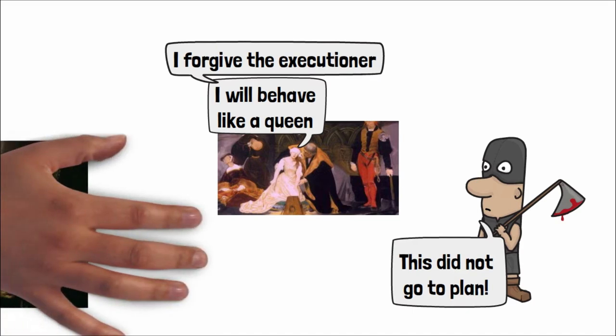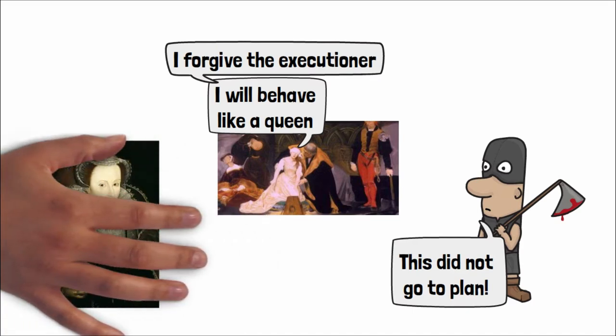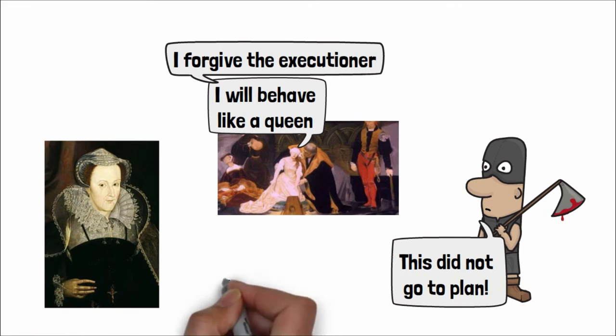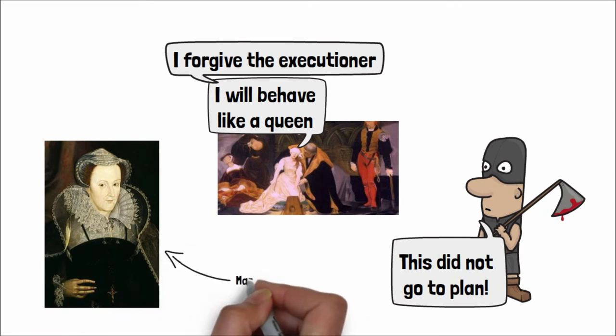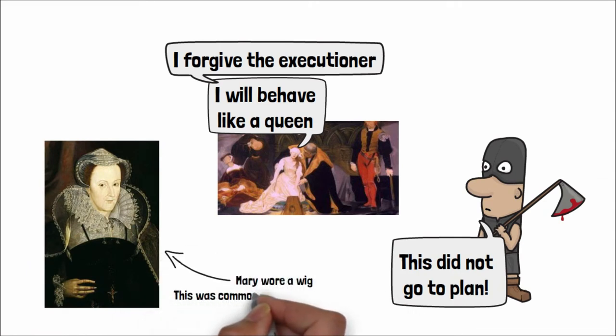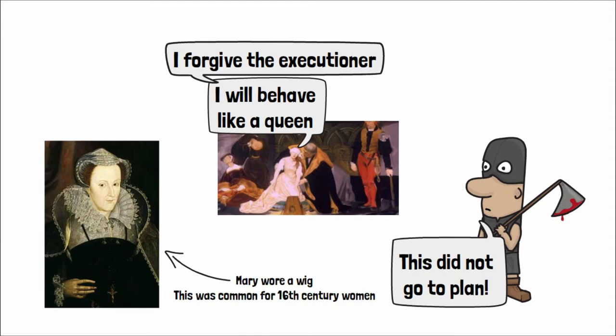Once Mary's head was separated from her body, the executioner held up her head, but he didn't realize that Mary wore a wig, and so the head fell onto the floor and rolled away. Not a pleasant end for a queen, I'm sure you'll agree.